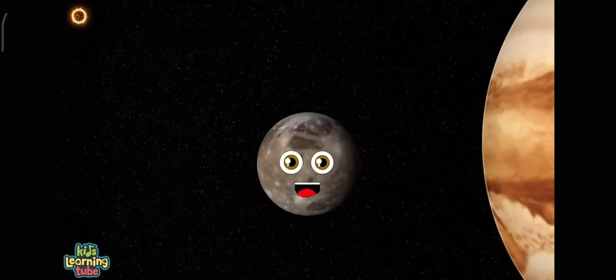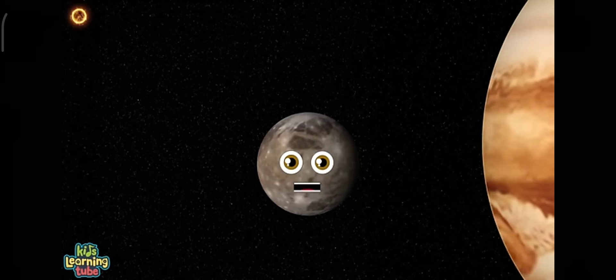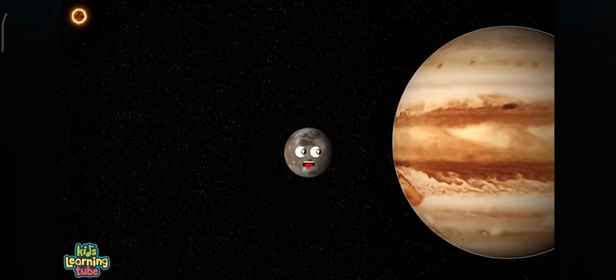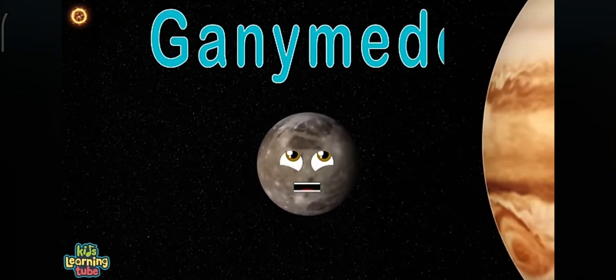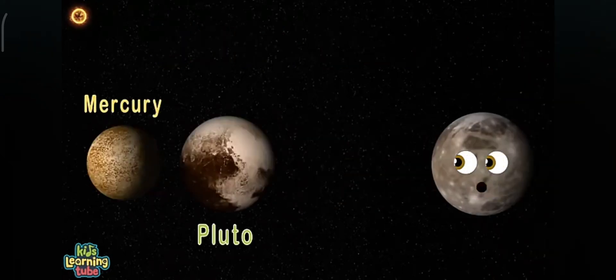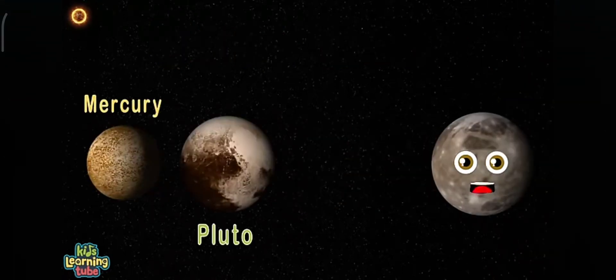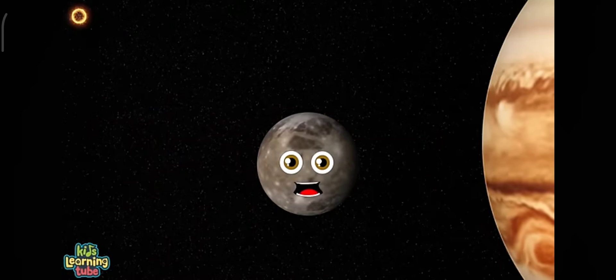I'm the largest satellite in the solar system. I orbit Jupiter, my name is Ganymede. Larger than Mercury, Pluto, and slightly smaller than Mars. I'd be classified as a planet if I orbited our star.